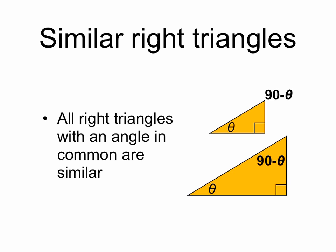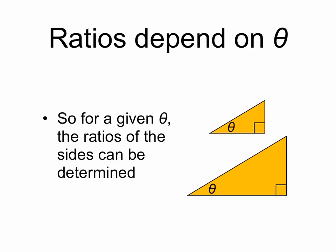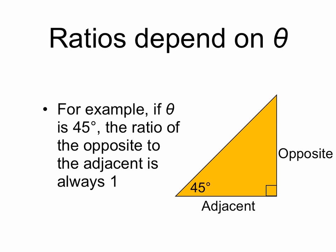So all right triangles with an angle in common are similar, and because they're similar, their sides have to be in fixed ratios. The ratios of the sides of these triangles can be determined simply as a function of theta. For example, let's consider a triangle with an angle theta of 45 degrees.